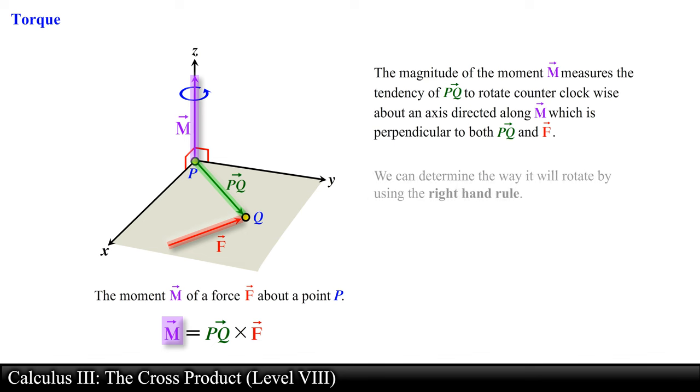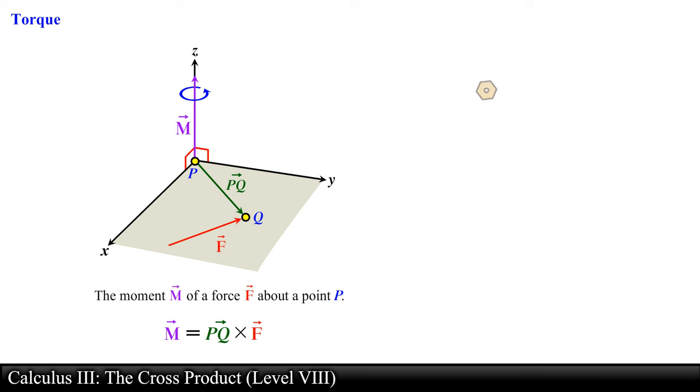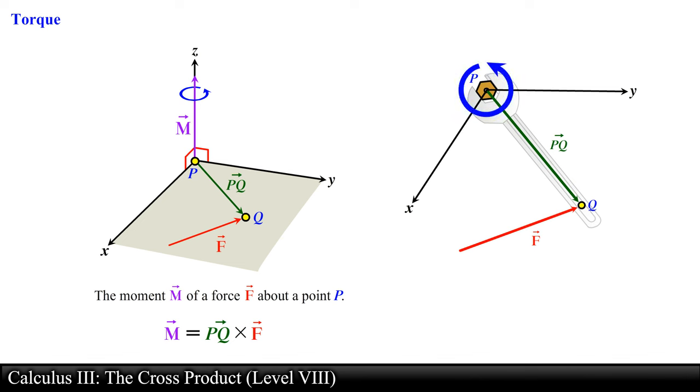We can determine the way it will rotate by using the right-hand rule introduced in the previous videos. The concept of a moment makes more sense if we use a bolt and a wrench. We can tighten a bolt that is located at point P and is perpendicular to the XY plane. By applying a force on the wrench, this will produce a turning effect. In this case, we are producing a moment or a torque relative to point P, or in this case, the origin.